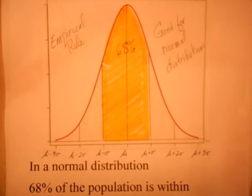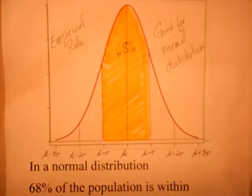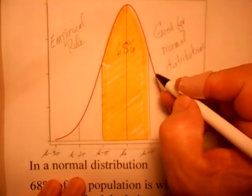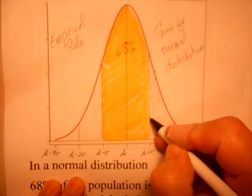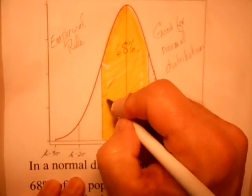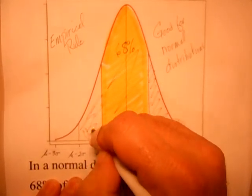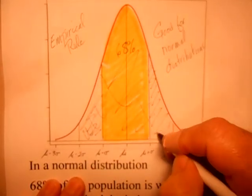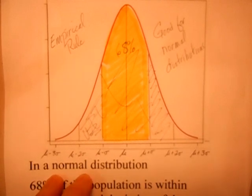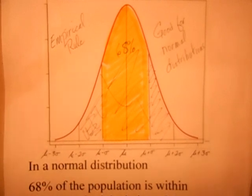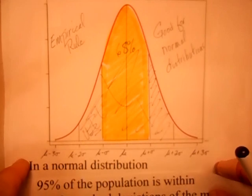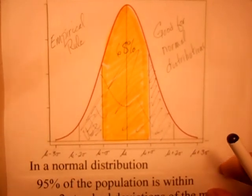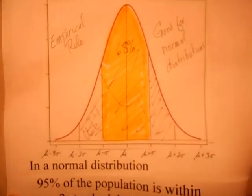Moreover, if you go out to two standard deviations above and below the mean, you're going to have 95% of the population within two standard deviations of the mean.